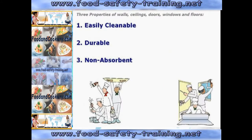If you look at the internal fabric of a food premises, walls, ceilings, doors, windows and floors should have three main properties. These should be easily cleanable, durable or long lasting, and impervious or non-absorbent. That last property leaves wood out of the equation, which is an absorbent material that could hold moisture and therefore allow bacteria to survive within the wood.